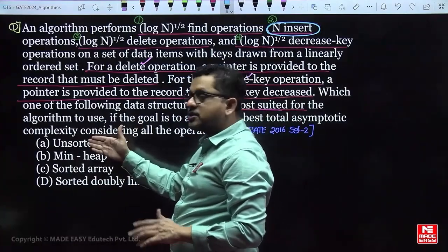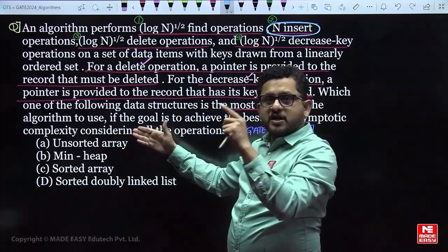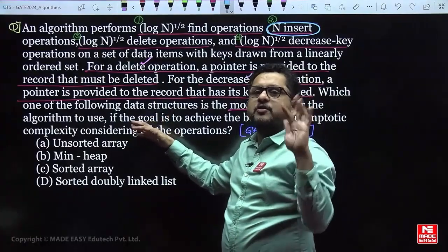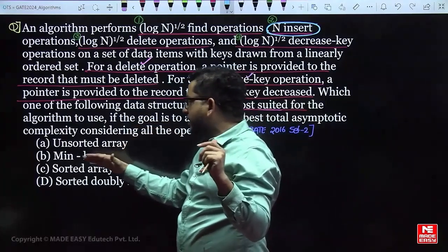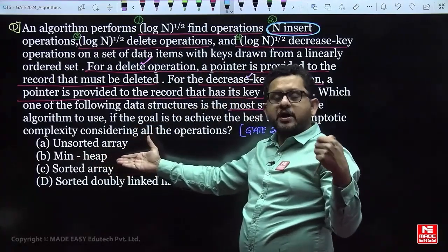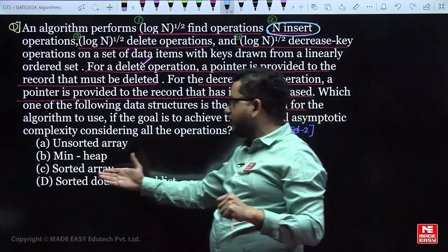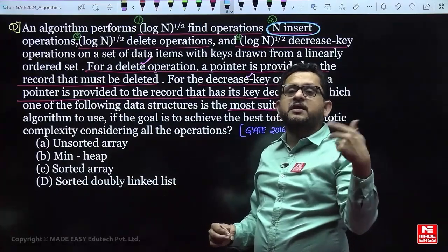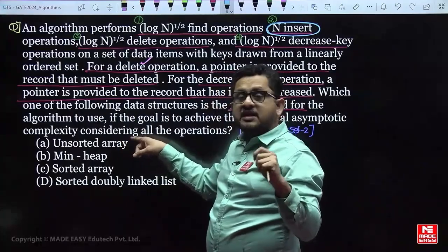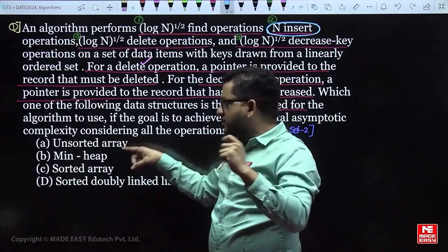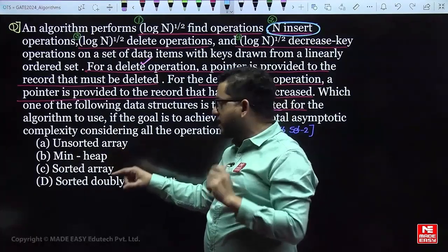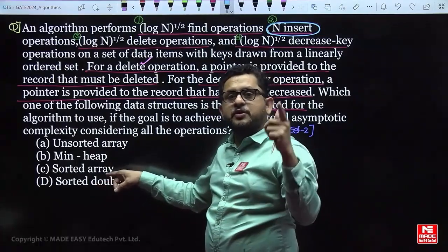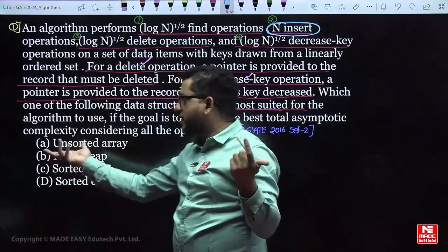Considering options: unsorted array — 1 insertion costs O(1), so n insertions cost O(n). Min heap — 1 insertion costs O(log n), so n insertions cost O(n log n). Sorted array or sorted doubly linked list — 1 insertion costs O(n), so n insertions cost O(n²). Therefore the best possible data structure based on insertions is the unsorted array.